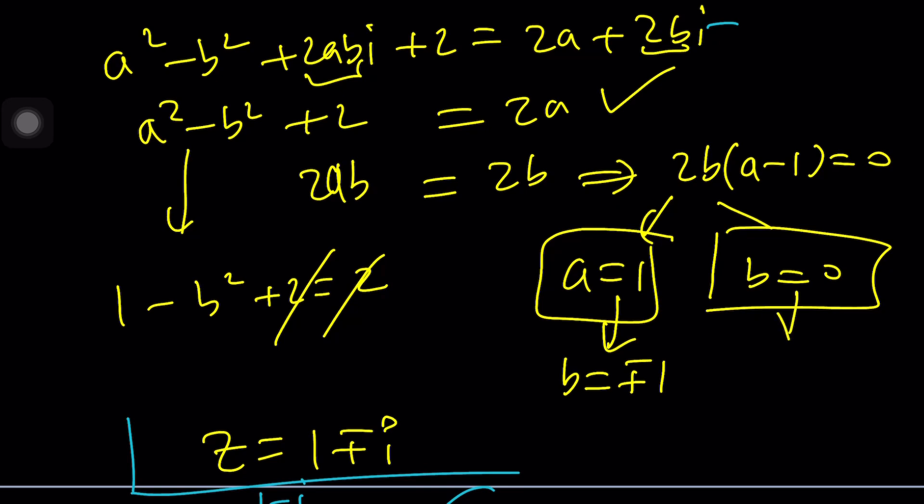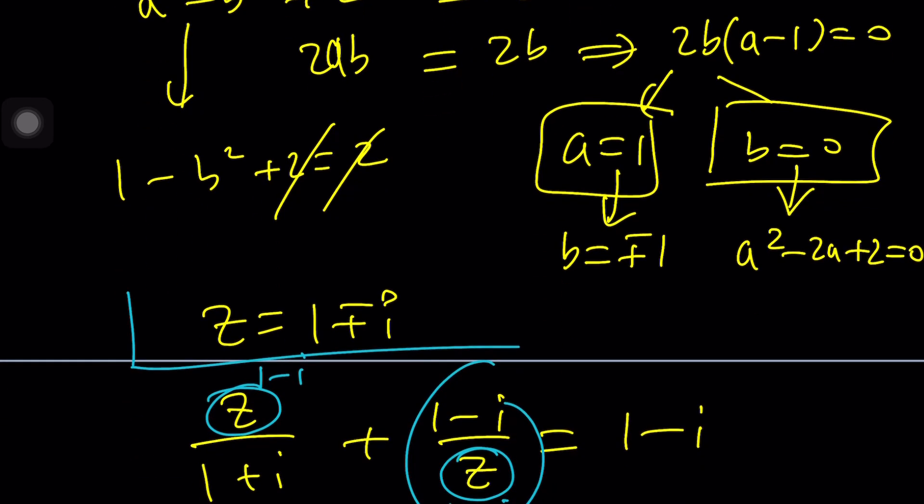What about b equals 0? If b is equal to 0, then in the first equation you're going to get a squared plus 2 equals 2a, but unfortunately, let me write it down here, or fortunately I don't know, you're not going to get any real solutions. Uh-oh.